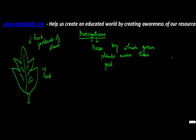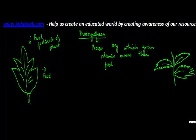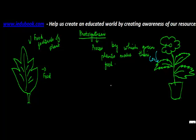Whenever you have a plant — let's say this is your plant — there are several leaves in this plant and there is a flower. Please don't go on the colors of this. Now when this plant is in the free air, what happens is it takes carbon dioxide from the air.